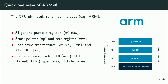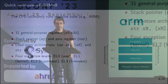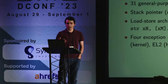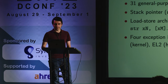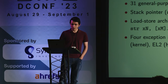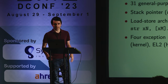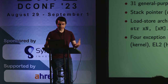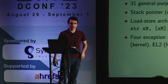A quick overview of ARM: the CPU runs ARM machine code. You have a bunch of registers and a stack pointer. It's a load-store architecture, meaning specific load and store instructions interact with memory, while all other instructions are arithmetic between registers. There are four exception levels providing hardware security support: user mode, kernel mode, hypervisor mode, and firmware. Each higher privilege level can restrict the behavior of lower privilege levels.